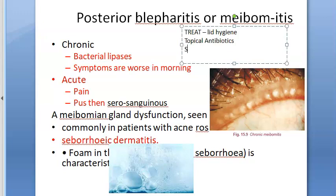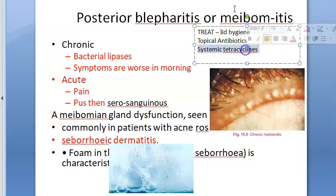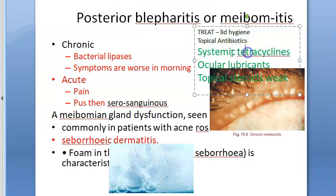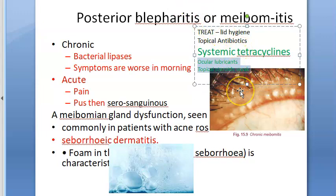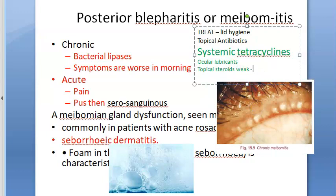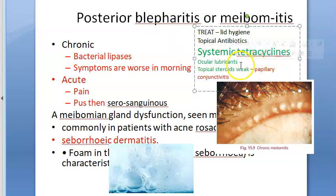Systemic tetracyclines like doxycycline remain the mainstay of treatment for posterior blepharitis because of their ability to block staphylococcal lipase production. Ocular lubricants such as artificial tears are also used. Topical weak steroids may be required in people who have papillary conjunctivitis. The main treatment in meibomitis is systemic tetracycline like doxycycline.